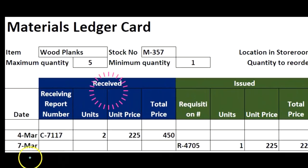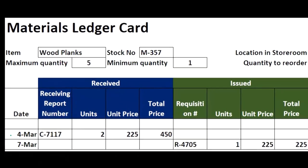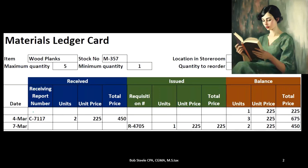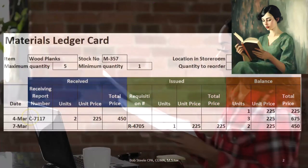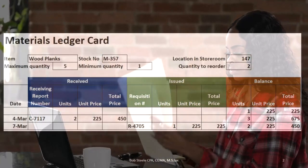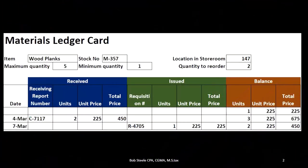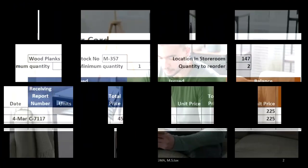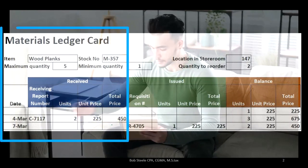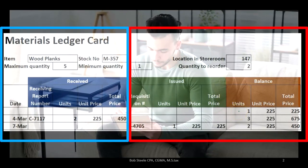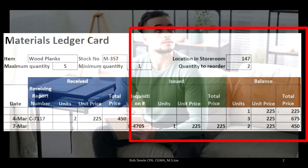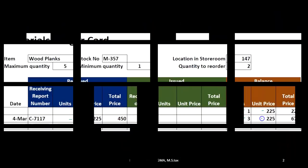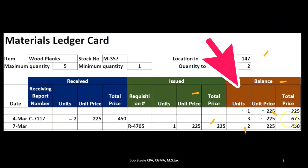We might be tracking this information on March 4, where we received materials. We have a receiving report — in a large company, this is the documentation we use to tie out to the receiving report. The warehouse received and counted the items. We have two units at a unit price of $225, so the total price is two units times $225, or $450. Bringing this to the balance, we started with one unit at $225, and now adding two units gives us three units — they all cost $225, so three times $225 gives us a total of $675.